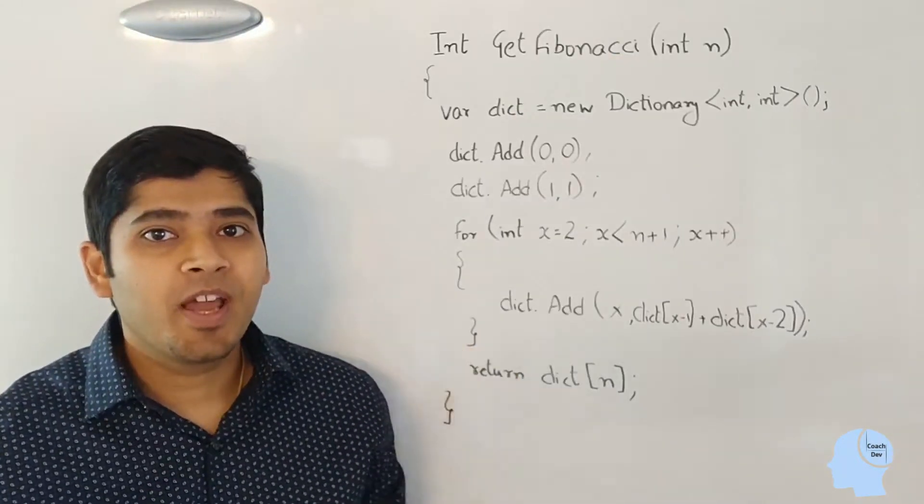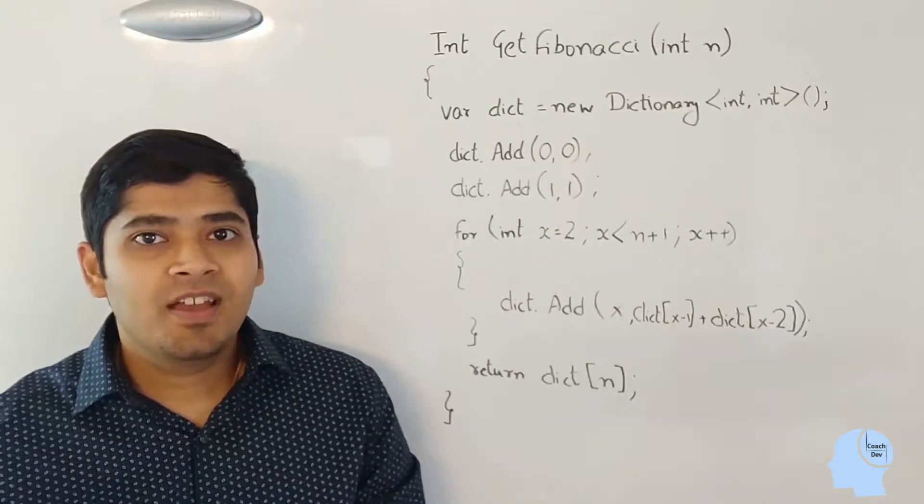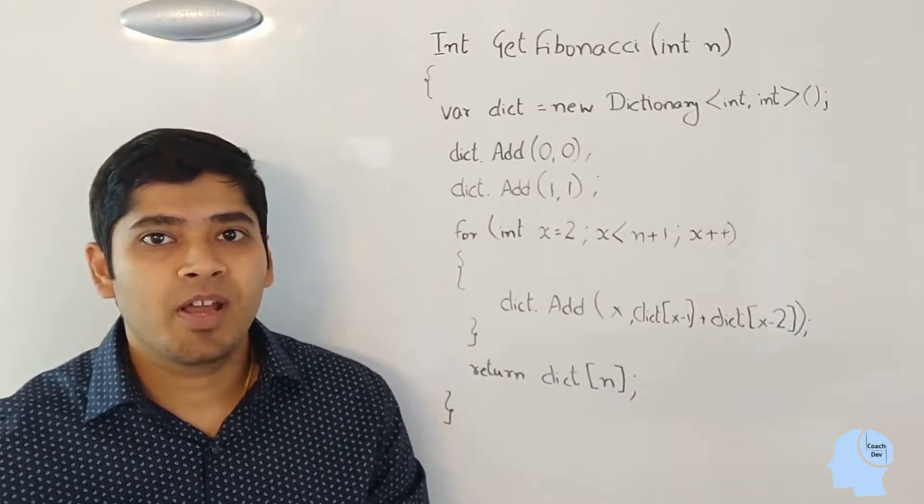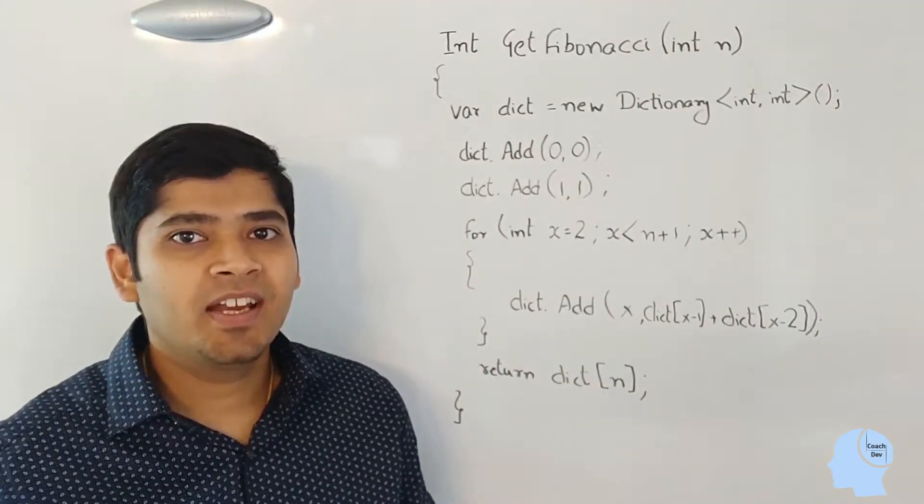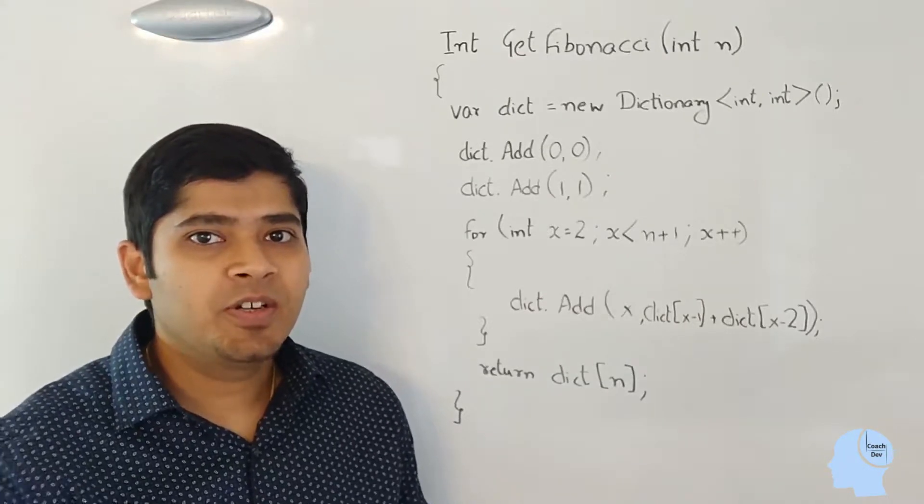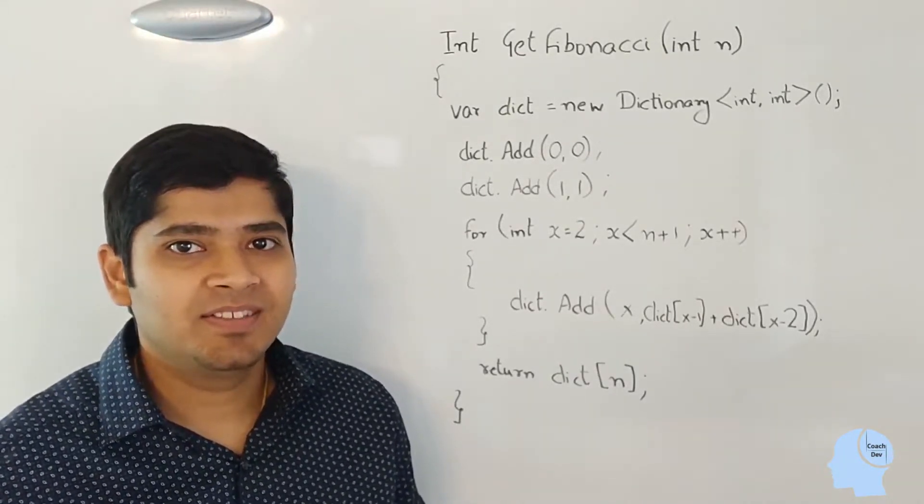So here is the program in which I'm storing all my results in a dictionary, also known as hash map or hash table. To begin with, I add two values to my dictionary. At index 0, the value is 0 and at index 1, the value is 1.